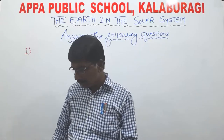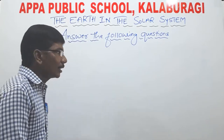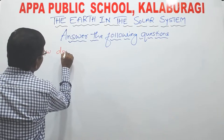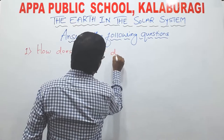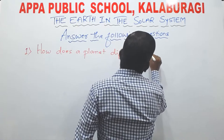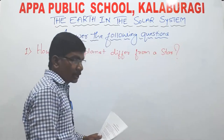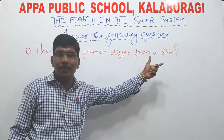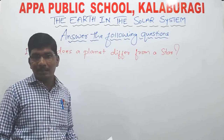The first question is: how does a planet differ from a star? Already in my explanation I said to you what do you mean by planet and what do you mean by star. So if you heard carefully my explanation, you can answer this question.